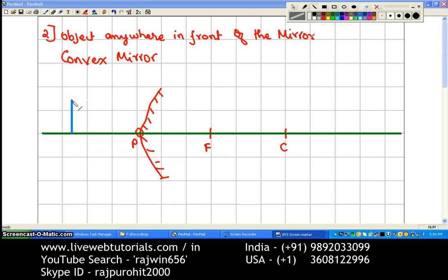Now the first ray - this ray is parallel to the principal axis. Any ray parallel to the principal axis has to pass through the focus. So through the focus inside the mirror you will show this line dotted and then the reflection will take place like this.